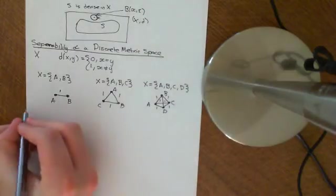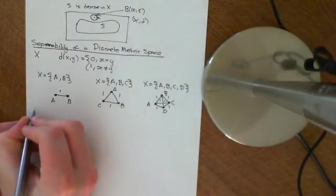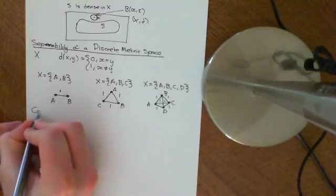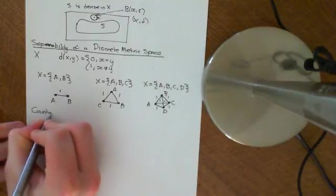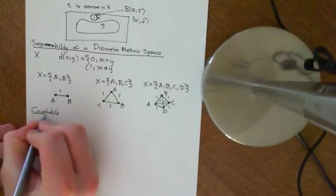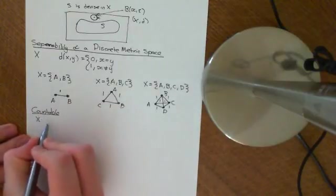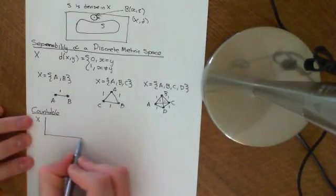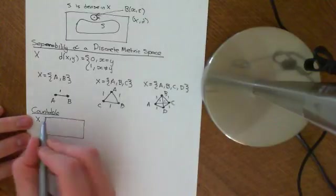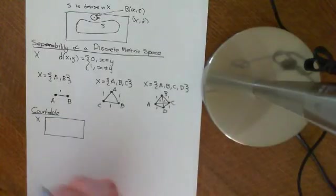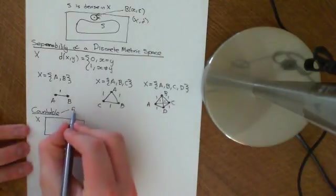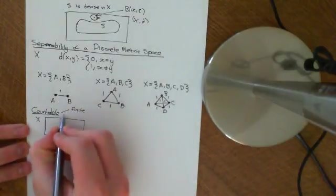So firstly, we know that if a discrete metric space is countable, in fact if any metric space is countable, that is, the number of elements in the set X is either finite or it's countably infinite. So that's what countable means.